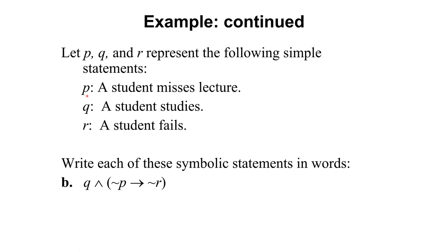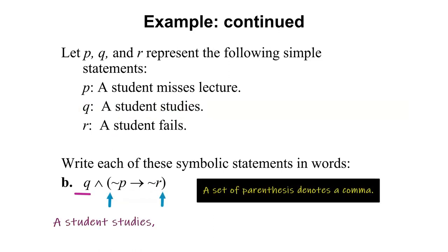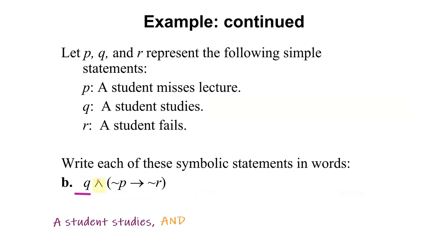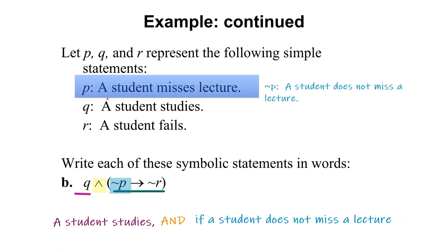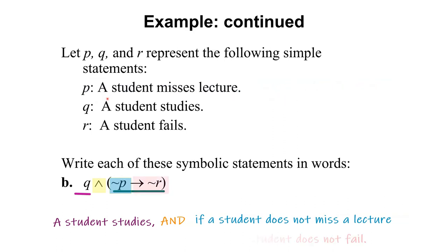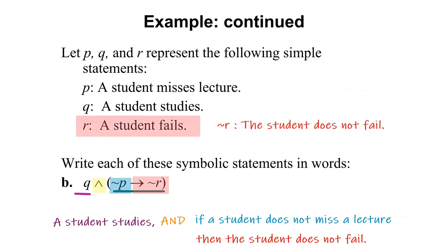For another symbolic statement using the same representation, if we write it in words: 'a student studies,' then a comma because there is a parenthesis, followed by 'and if the student does not miss a lecture' — negating P — 'then the student does not fail' — negating R.